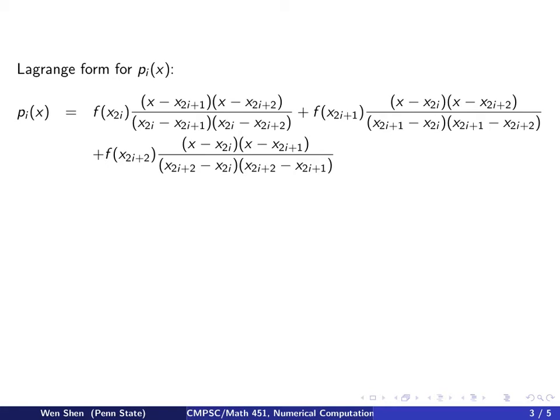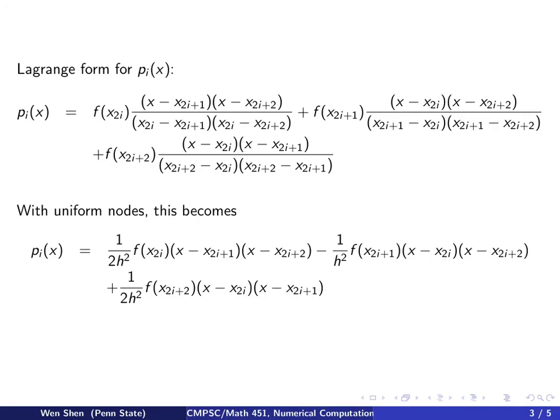So this is a general form of the interpolating polynomial in the Lagrange form for just any interpolating points. Remember, we are dealing with a uniform grid, and let's see what that gives us. Now, with a uniform grid, we would know already all the values in the denominator, because these are just the interpolating points.